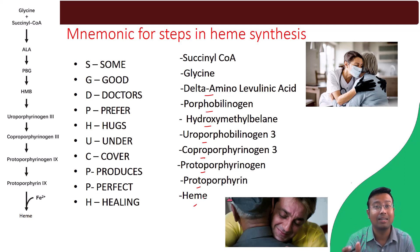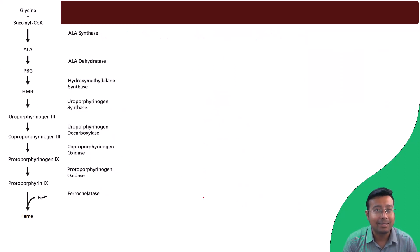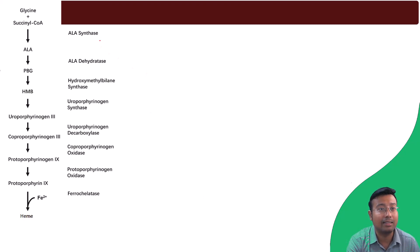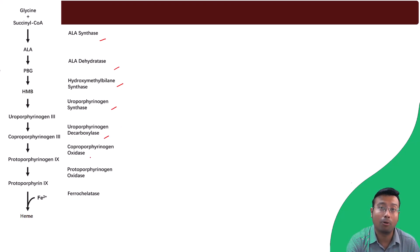You can take a screenshot and remember with the help of these images — the more the merrier. Next, what are the enzymes? The enzymes are ALA synthase, ALA dehydratase, HMB synthase (hydroxymethylbilane synthase), uroporphyrinogen synthase, uroporphyrinogen decarboxylase, coproporphyrinogen oxidase, protoporphyrinogen oxidase, and ferrochelatase.